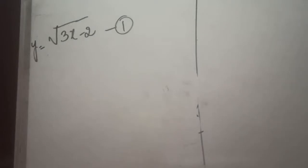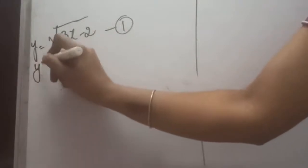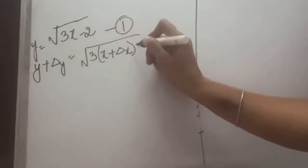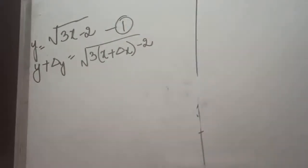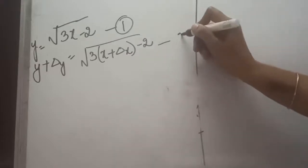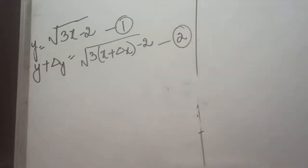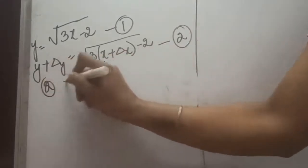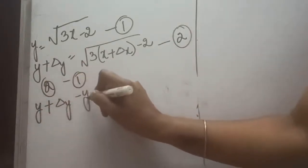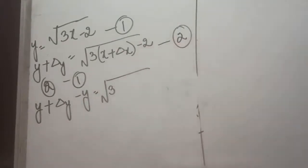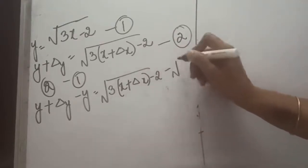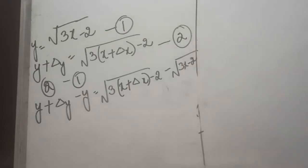The second step is to add the increments. If we add the increment on the left hand side it will be y plus delta y, and on the right hand side it will be x plus delta x minus 2. We cannot simplify further — we can just open up the bracket. Now doing equation 2 minus equation 1, on the left hand side it will be y plus delta y minus y, and on the right hand side it will be root(3x + delta x - 2) minus root(3x - 2).